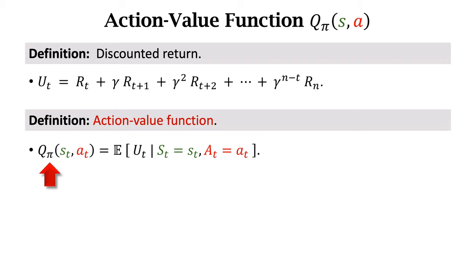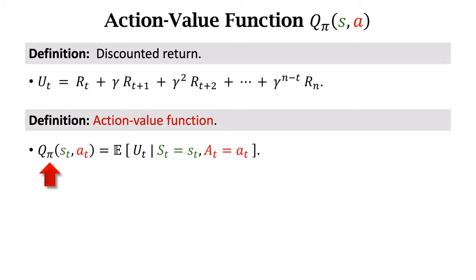That's why the action value function q_π depends on the policy function π. With different policy functions, q_π would be different.